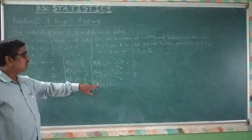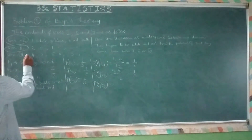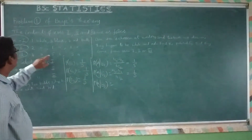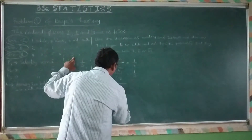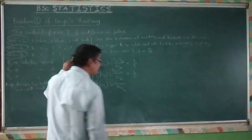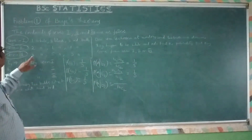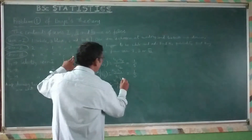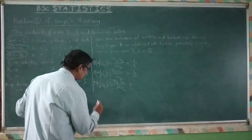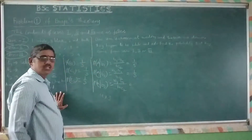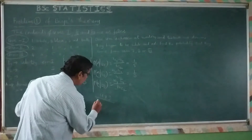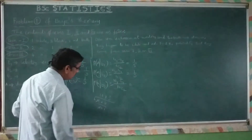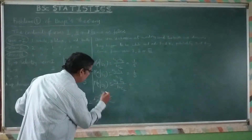Probability of A given E3. Urn 3 is already selected. Total balls: 4 + 5 + 3 = 12. Total ways to draw 2 balls: 12C2 = 66. We select 1 white ball from 4: 4C1 = 4. And 1 red ball from 3: 3C1 = 3. So probability is (4 × 3) / 66 = 12/66 = 2/11.